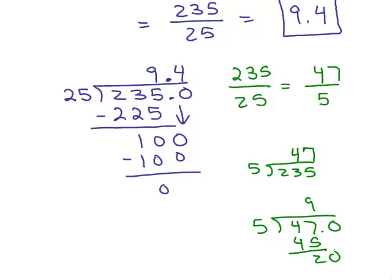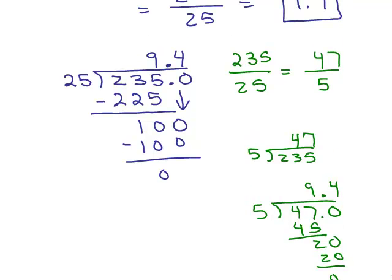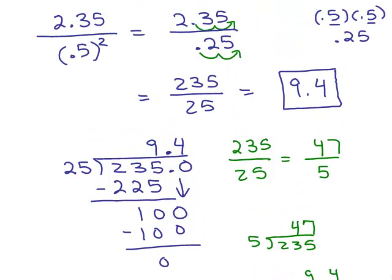5 into 47 goes in 9 times. Remainder, so I put an extra 0 here. Notice I'm still going to get 9.4. I am writing my answer in decimal form. So I get my answer 9.4 whether or not I reduce first.